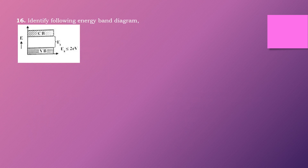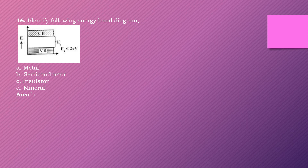Question sixteen: Identify the following energy band diagram. Options are: metal, semiconductor, insulator, mineral. The right answer is option B: semiconductor. So, the diagram represents a semiconductor.